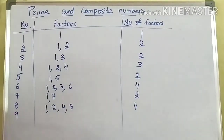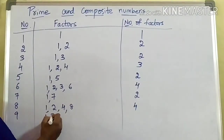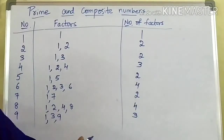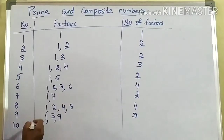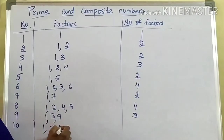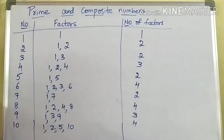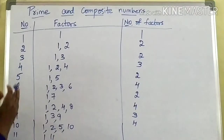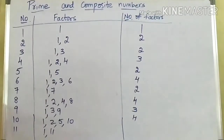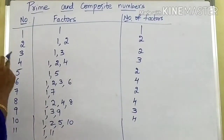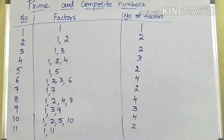Coming to nine, what are the factors of nine? One, three and nine — so nine is having three factors. Coming to ten, what are the factors of ten? One, two, five, and ten. So total number of factors for ten are four. Coming to eleven, what are the factors of eleven? One and eleven. Like this you can find all the factors of further numbers.